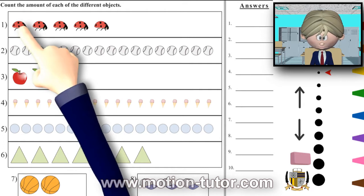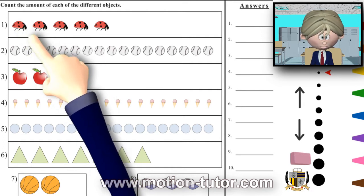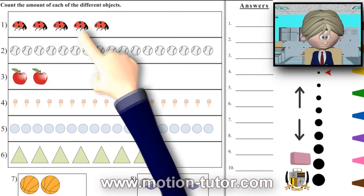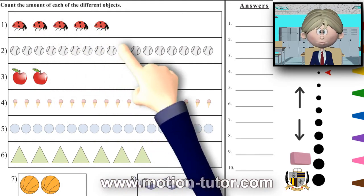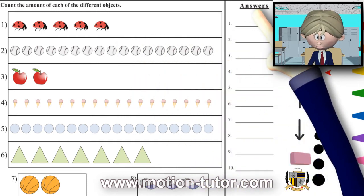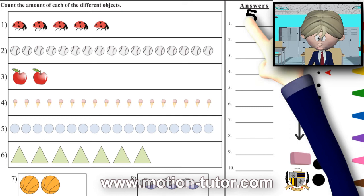We have some ladybugs here. Let's count the ladybugs: one, two, three, four, five. There are five ladybugs, so we write the number over here: five.